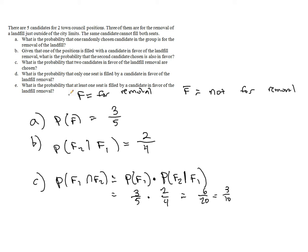Letter D asks: what is the probability that only one seat is filled by a candidate in favor of the landfill removal? This is tricky, because 'only one seat' could mean the first seat or the second seat. It's helpful to draw a two-by-two table with candidate one, candidate two, and the possibilities: favor, not favor, favor, not favor.